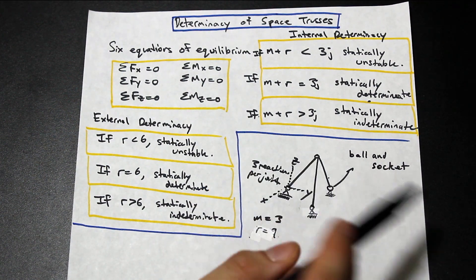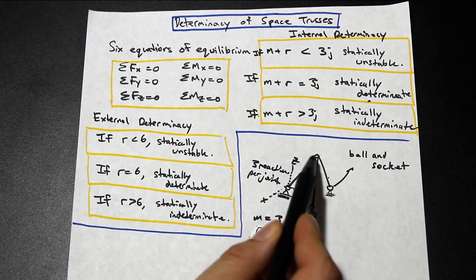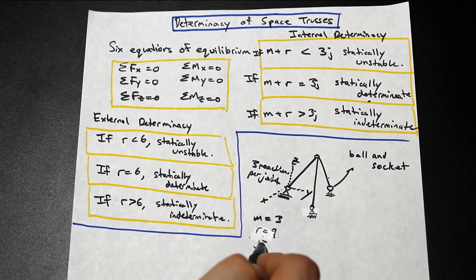Now, what is our J? Well, our J is joints, and it's the same thing as the other one. All you need to do is count all the joints up. So we have one, two, three, four. Okay, so J is equal to four.